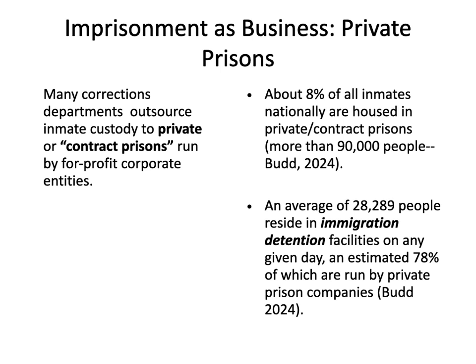The move to privatize public services like corrections is partially spurred in the United States by distrust in government — the belief that pretty much anything can be run better if outsourced to the private sector is a cornerstone of the modern conservative movement. The use of private prison facilities varies by locality; some states don't use them at all, while others like Montana rely on them to house up to half of all inmates. President Biden issued an executive order to phase out privately run prisons for federal penitentiaries, but the Department of Homeland Security still heavily relies on them. An average of 28,289 people reside in immigration detention facilities on any given day, and an estimated 78% of those are run by private prison companies.